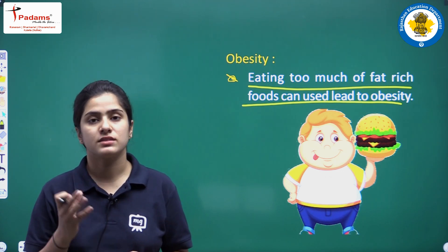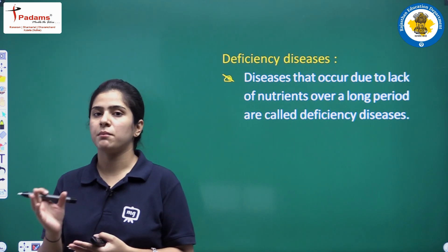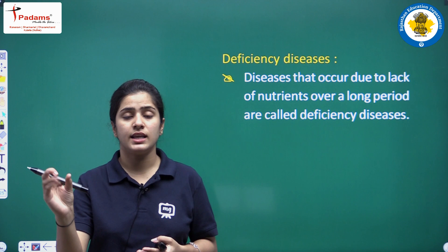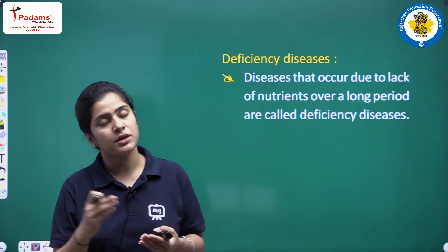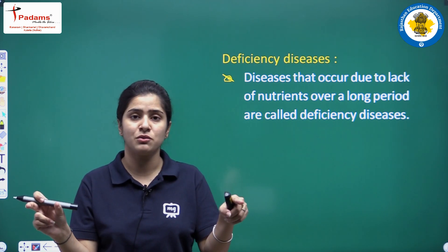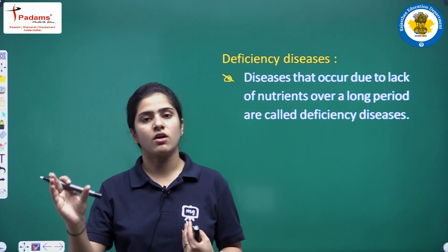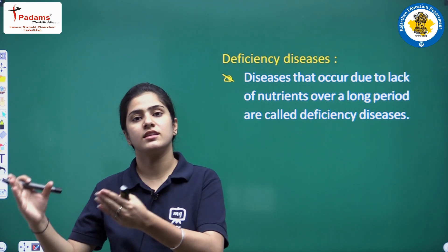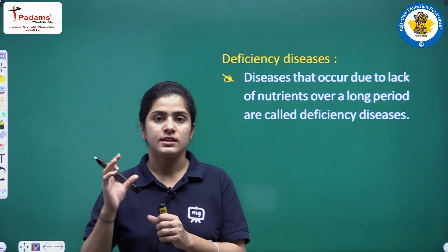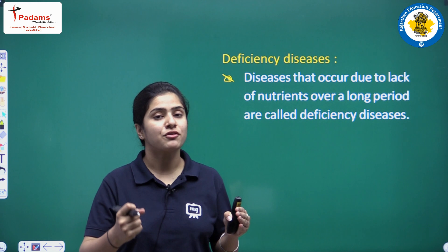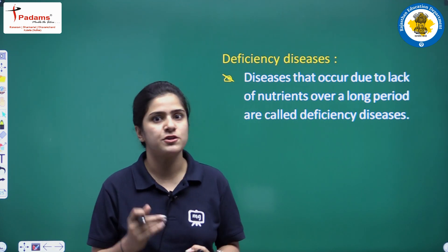Apart from obesity, we also have deficiency diseases. Suppose we are having an adequate amount of food, but that food is not containing one or more types of nutrients, and we are eating that food over a long period of time. Then our body will be deficient in that nutrient. The diseases that occur due to the deficiency of particular nutrients are called deficiency diseases.